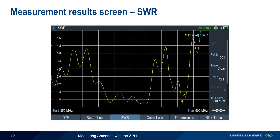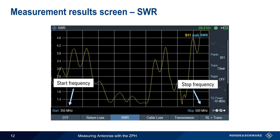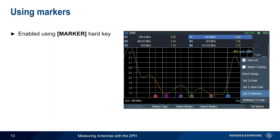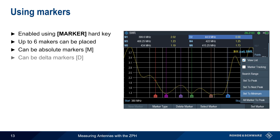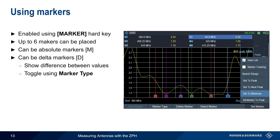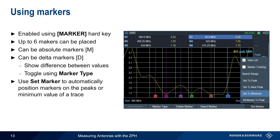Measurements run automatically when the antenna under test is attached. Here is an example of an antenna reflection measurement. In this case, we're looking at SWR as a function of frequency between 350 MHz and 500 MHz. Markers are enabled by using the Marker hard key, and these can be used to numerically measure antenna characteristics. Up to 6 markers can be placed on a trace, and these can be either absolute markers or delta markers, which show the difference between marker values. You can toggle between types by pressing Marker Type. The functions provided under Set Marker can also be used to automatically place markers on the peak or minimum values of the displayed trace.